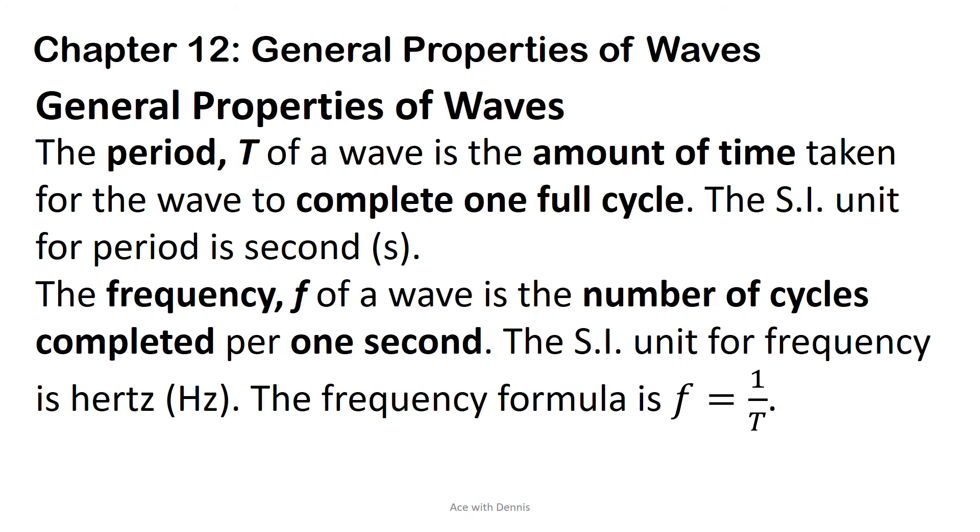The frequency, F, of a wave is the number of cycles completed per one second. The SI unit for frequency is hertz. The frequency formula is F equals one over T.